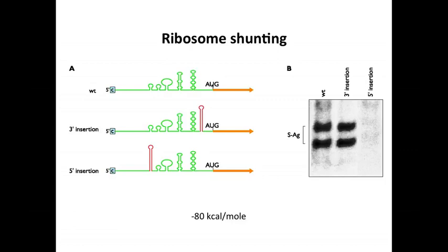So this is experimental evidence for ribosome shunting. What's been done here is to make three different messenger RNAs, and each of them has a protein that's going to be translated, which can be assayed readily, and the protein is shown on the right in this western blot. It's called S-antigen. This is actually a hepatitis B viral protein.